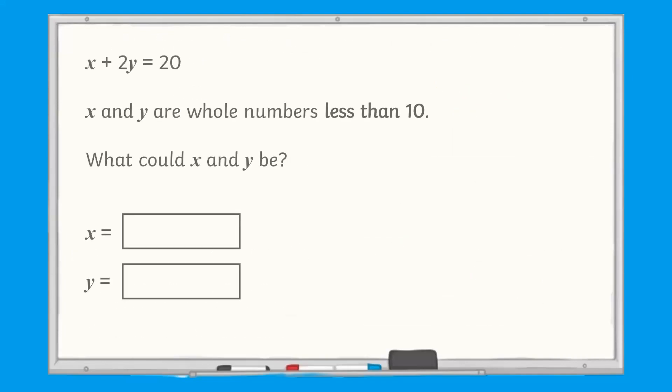Now it's time for a challenge. x add 2y equals 20. x and y are whole numbers less than 10. What could x and y be? Pause here and find all possible answers to this problem.